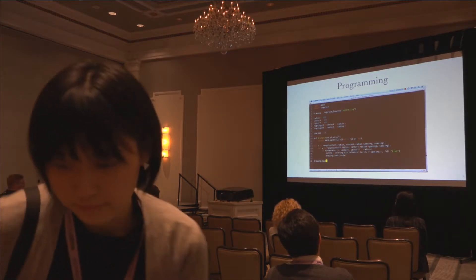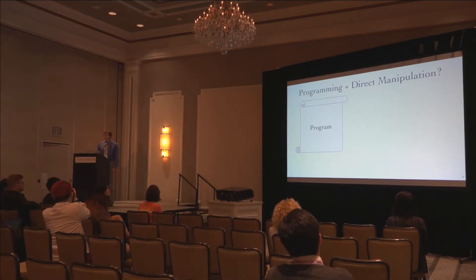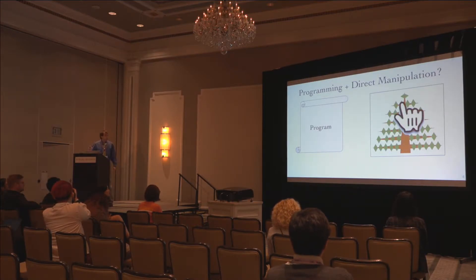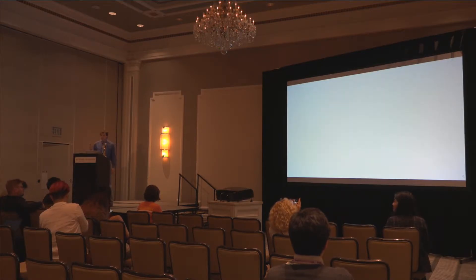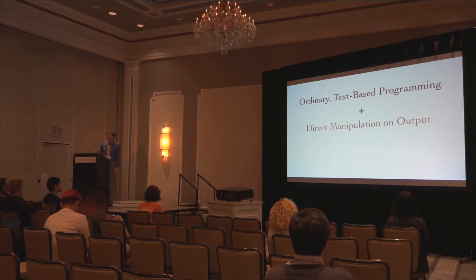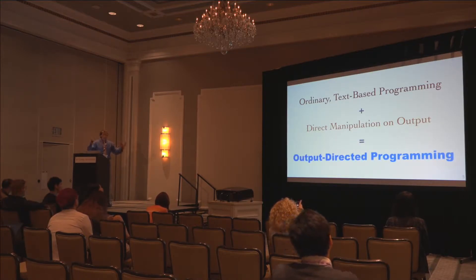Programming is powerful, but it's arcane. Could we combine these experiences? Could we have a system where you write your code, and then when you see that the output is wrong — it's always wrong — you could directly manipulate the output to enact a program repair? This is the vision we want to advance. We want to start with ordinary text-based programming and extend it with direct manipulation features, so you can always repair your program from the output. We call this output-directed programming.